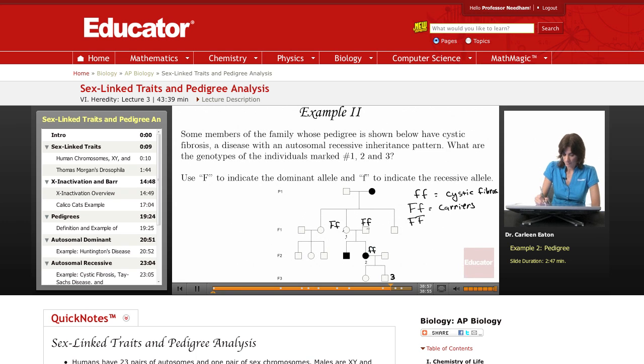So number one is a carrier. She's a heterozygote. Number two is affected. She's homozygous recessive.